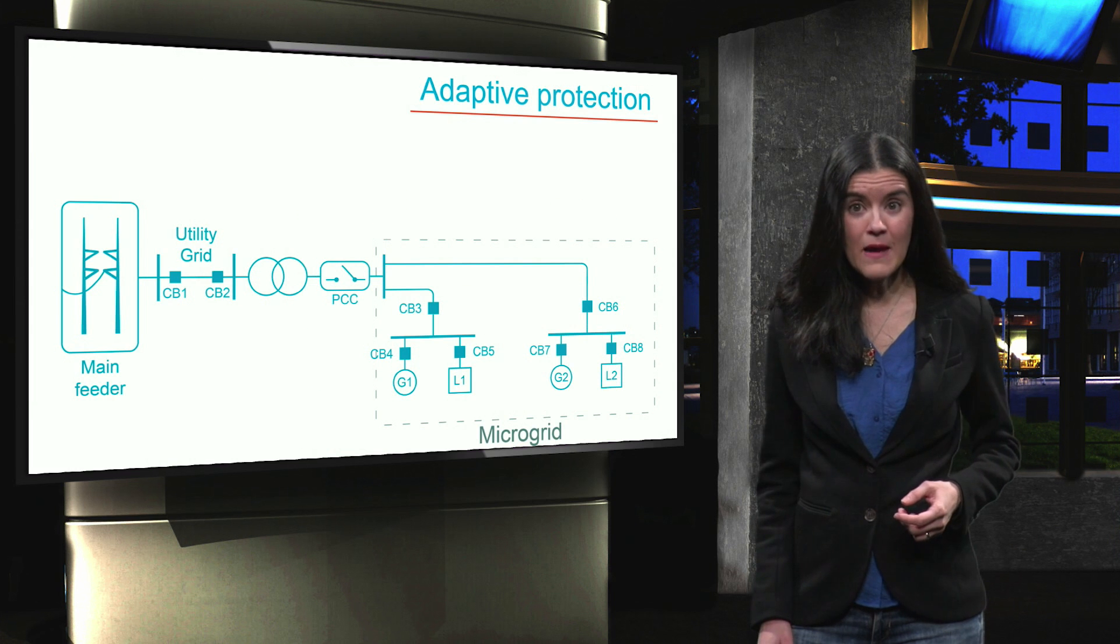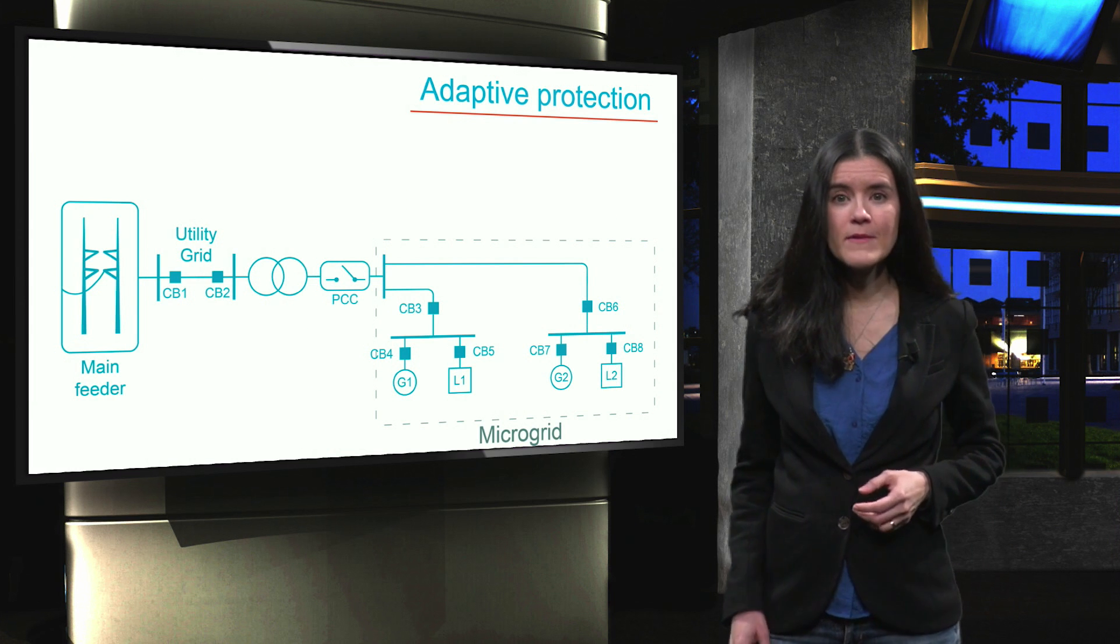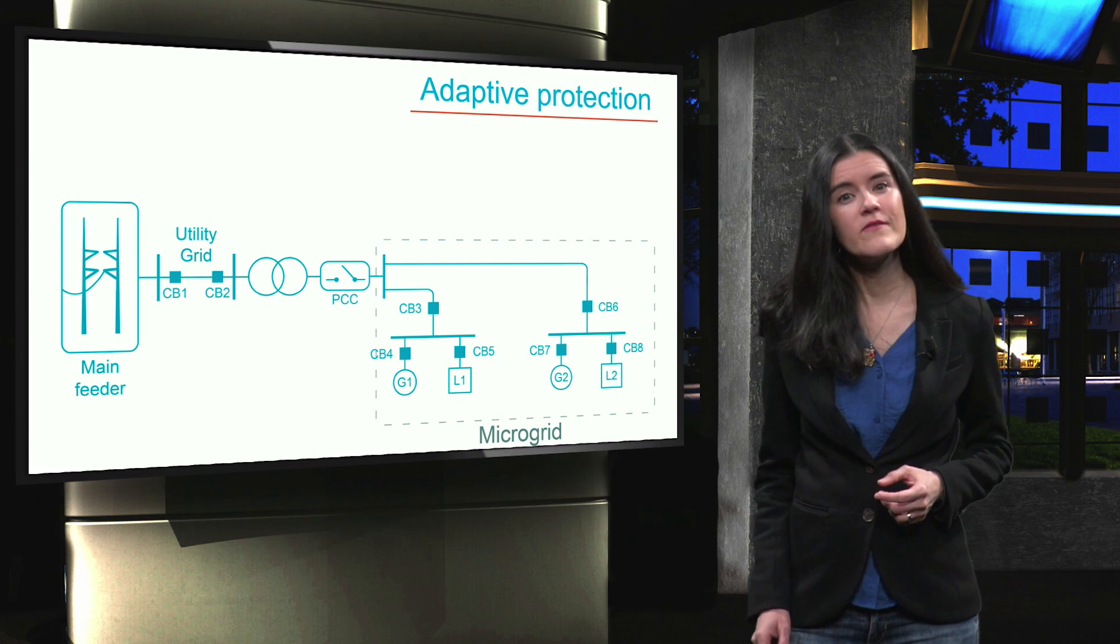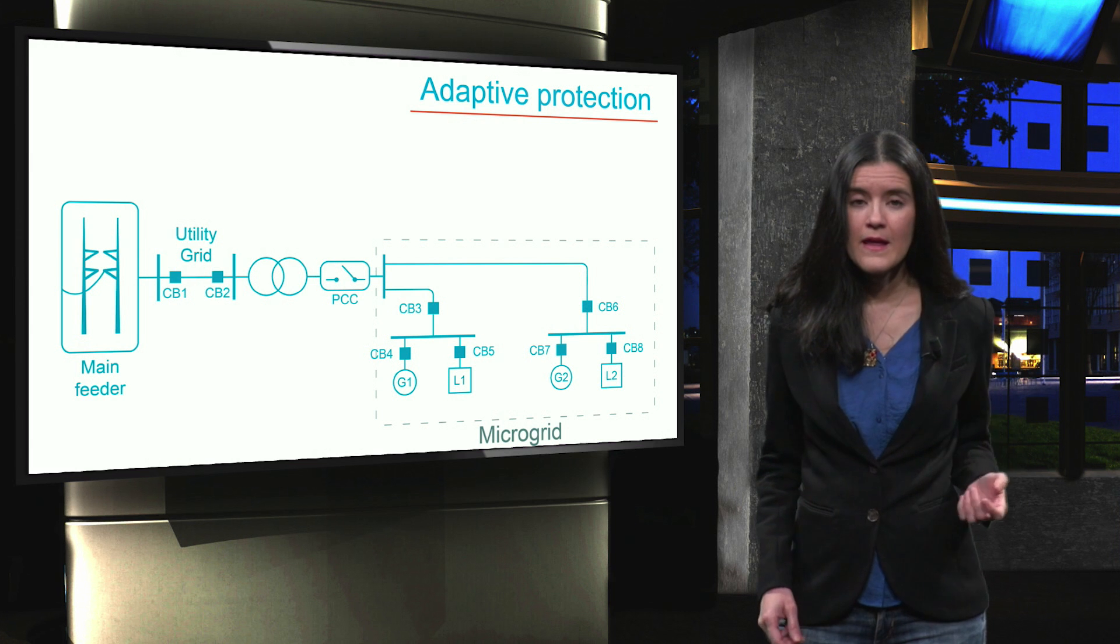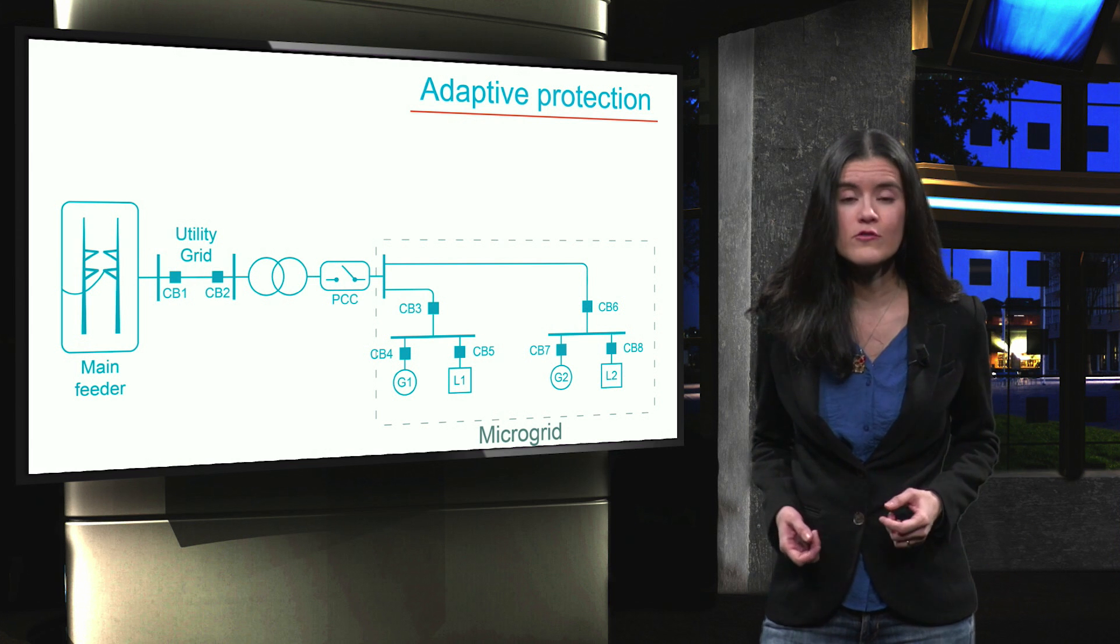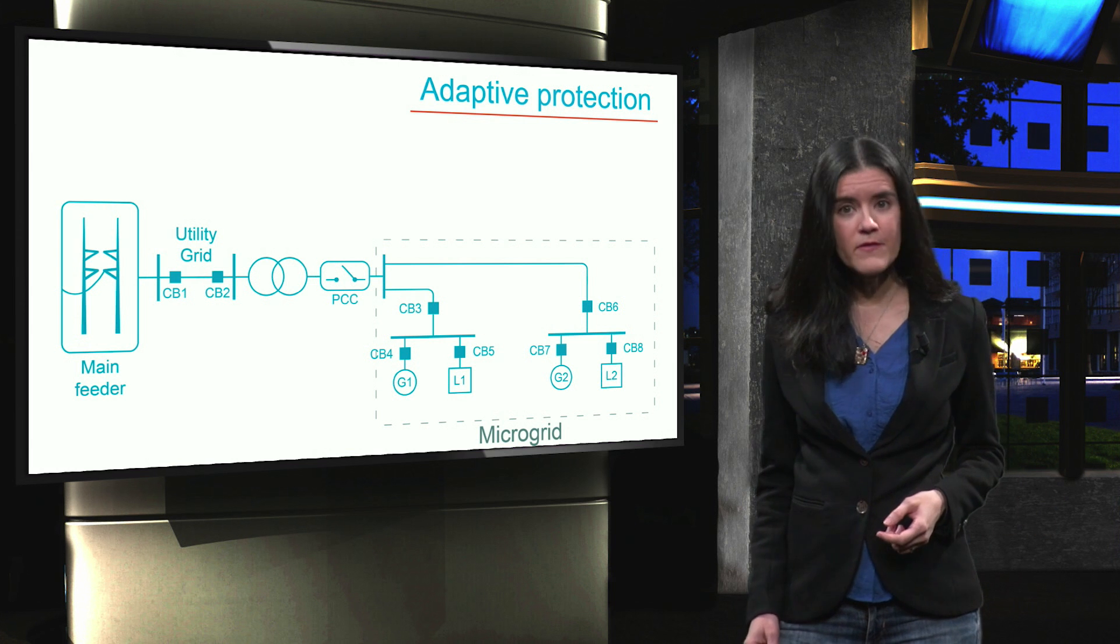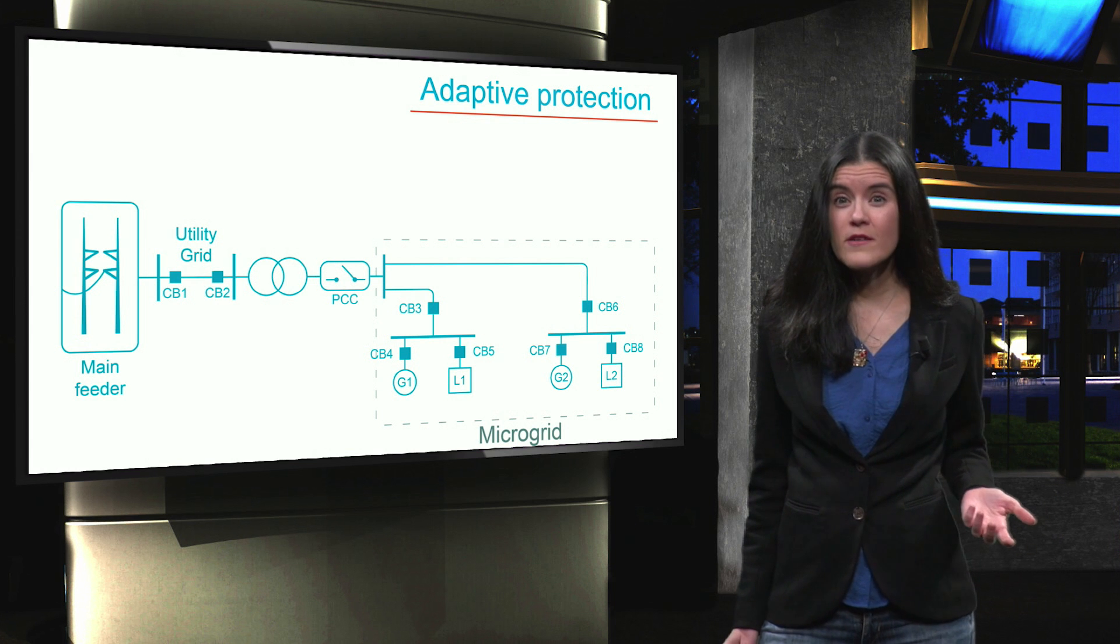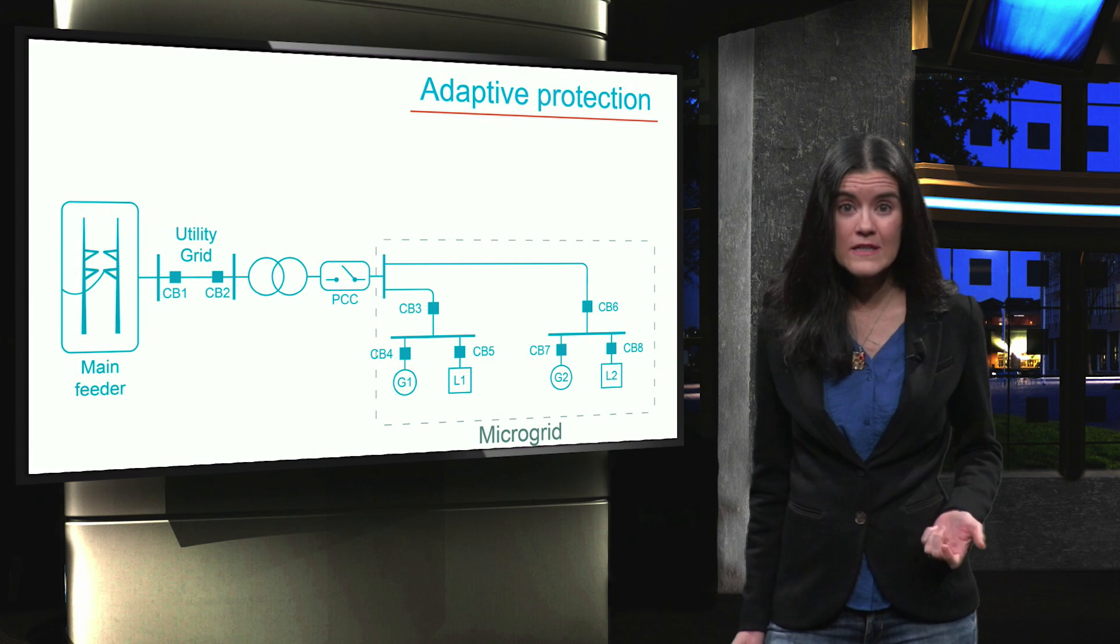Finally, we will discuss adaptive protection. Adaptive protection is a protection scheme that adjusts its protective response based on the network and system operating conditions. This selective response relies on the intervention of the microgrid's control system. To increase the reliability of the protection, adaptive schemes have been introduced such that the relay settings are adjusted based on their operation conditions.